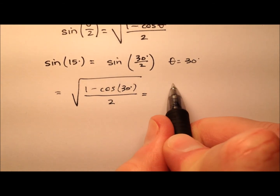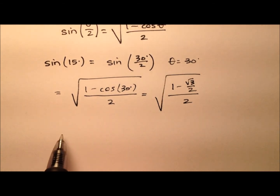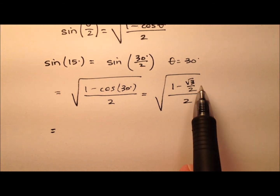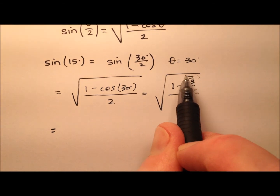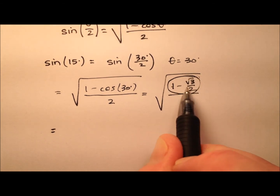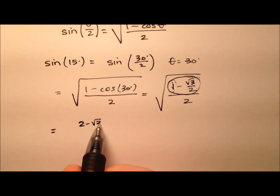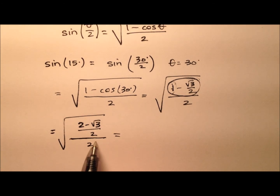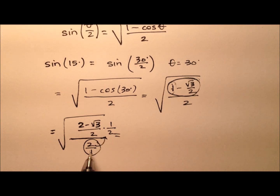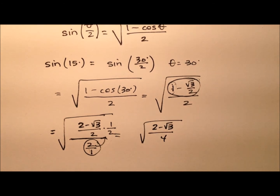We know that the cosine of 30 is √3/2, so we substitute that in — all divided by 2 and all underneath a radical. It doesn't automatically look very nice, but we're going to simplify this complex fraction. First, let's get common denominators for the numerator: multiply the 1 by 2/2, giving us (2 − √3) all over 2. Then dividing by 2 is the same as multiplying by 1/2, so we really have (2 − √3) all over 4 underneath the radical.